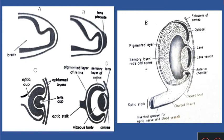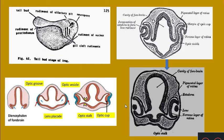So the optic vesicle starts growing, reaches the head ectoderm, starts invaginating, develops a stalk, and the invagination extends also to the optic stalk where it leaves a fissure called as the choroid fissure.